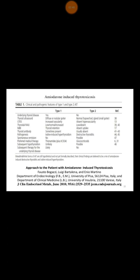When it comes to thyroid antibodies: in Type 1, because there is an underlying thyroid problem, you may get positive antibodies. But in Type 2, because the thyroid gland is normal, you may not find any antibodies.